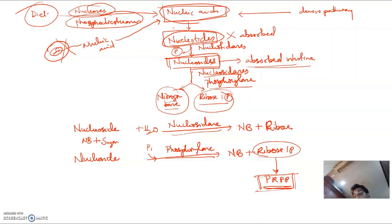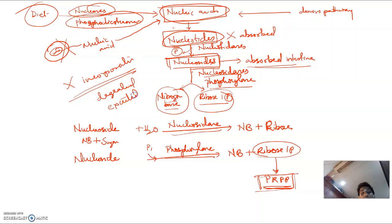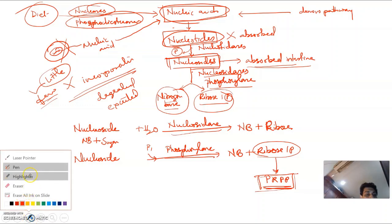This ribose-1-phosphate can be recycled to form PRPP. Most of the nucleic acids coming from diet are not incorporated inside the body — only very few are incorporated. They are mostly degraded and excreted.